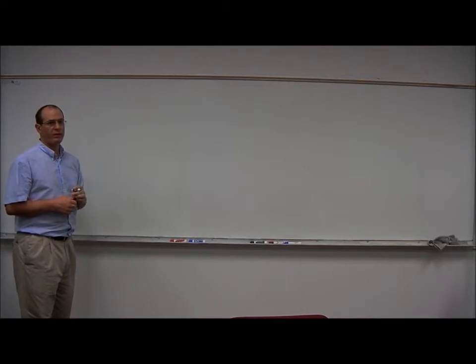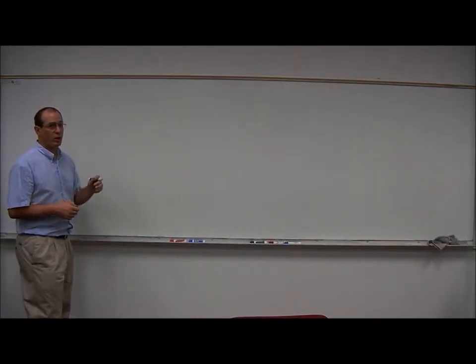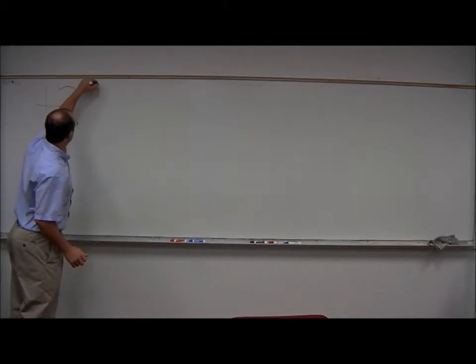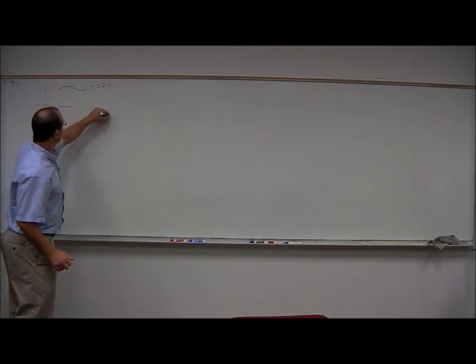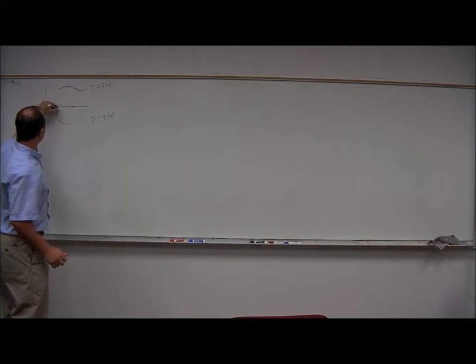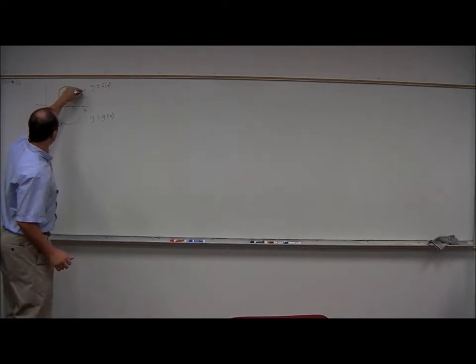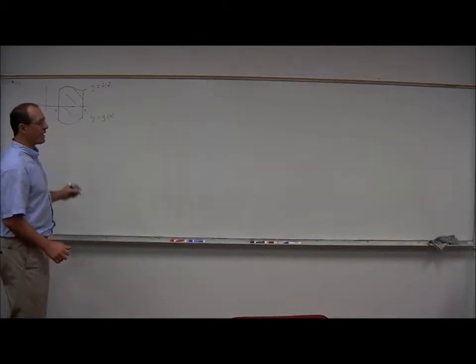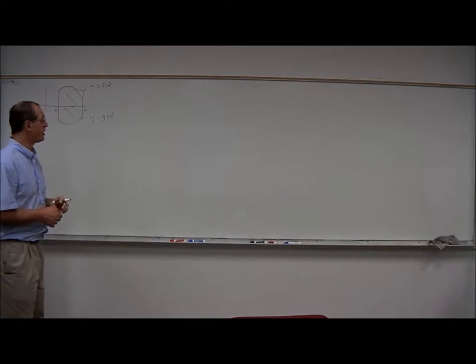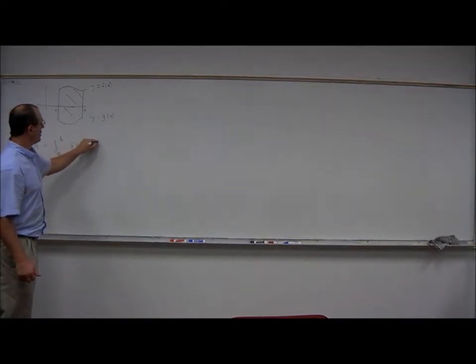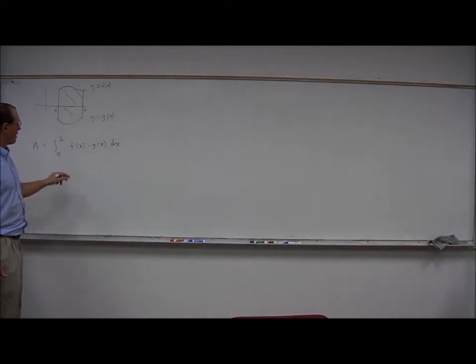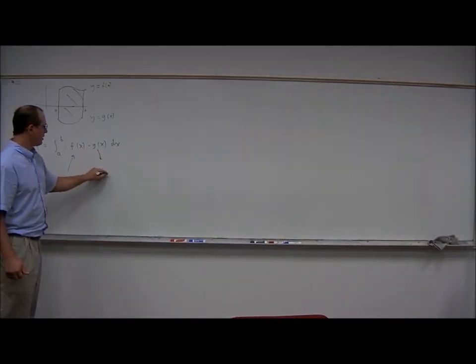In general, if you want to find the area between two curves, y equals f of x and y equals g of x, over an interval from a to b, the formula is the area equals the integral from a to b of f of x minus g of x dx, where f of x is the top curve and g of x is the bottom curve.